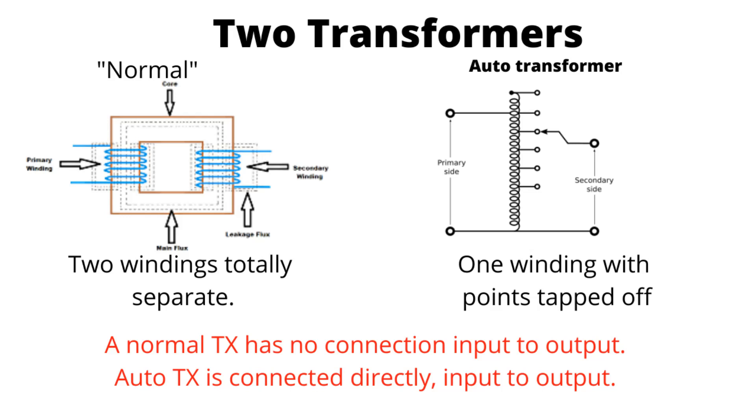So the two windings are totally separate. There is no connection between the two windings on a normal transformer, which is why they're very good for being isolation transformers.